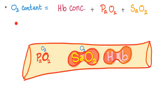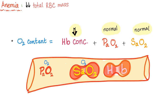Here's the whole story: oxygen comes from the lung into the arterial blood — PaO2. Then it jumps on the hemoglobin — SaO2. It depends on hemoglobin concentration; if you have less hemoglobin, you have less oxygen content. That's why in anemia, PaO2 is normal and SaO2 is normal, but hemoglobin concentration is decreased — so oxygen content decreases. Anemia means decreased total red blood cell mass and therefore decreased hemoglobin concentration, but PaO2 and SaO2 are normal, so oxygen content decreases.